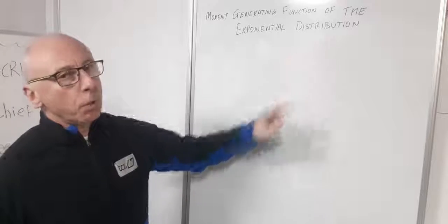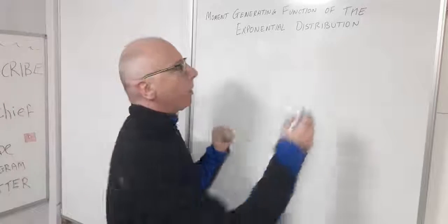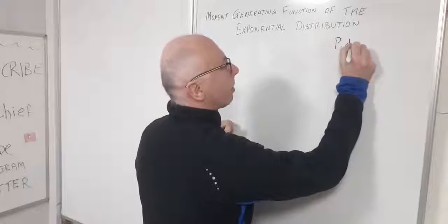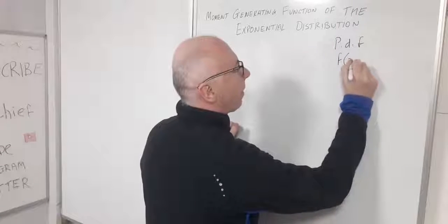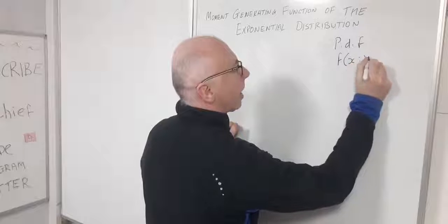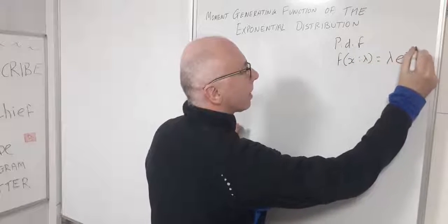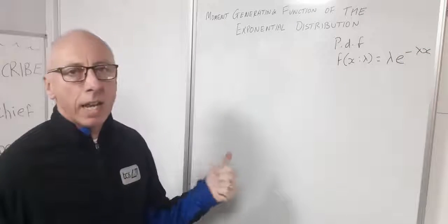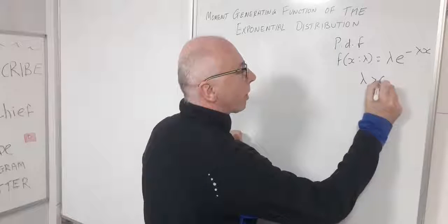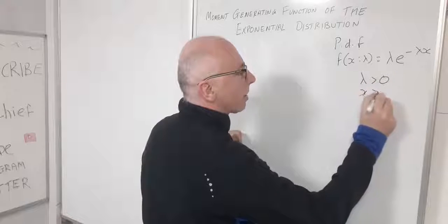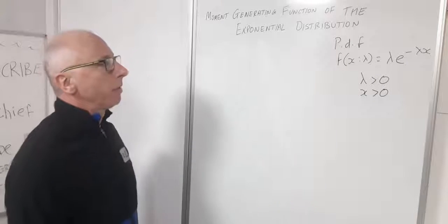The exponential distribution is a continuous distribution and its PDF is given by f(x, λ) = λe^(−λx), where λ > 0 is the parameter and x > 0 is our random variable.